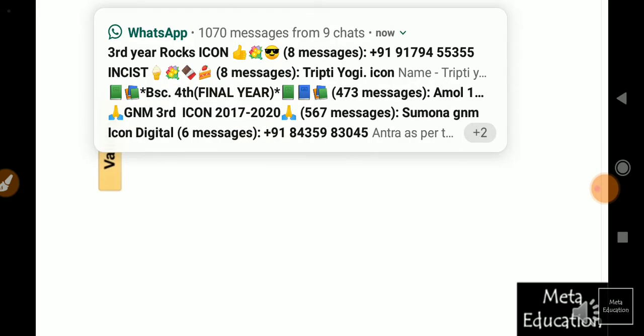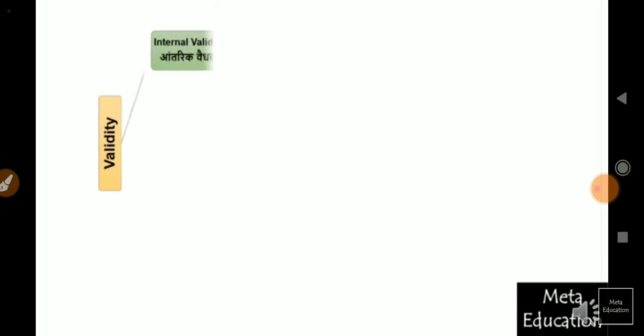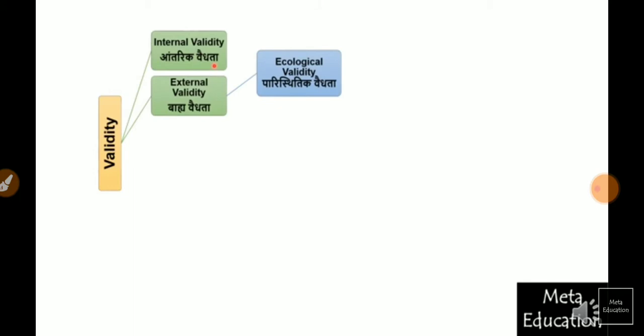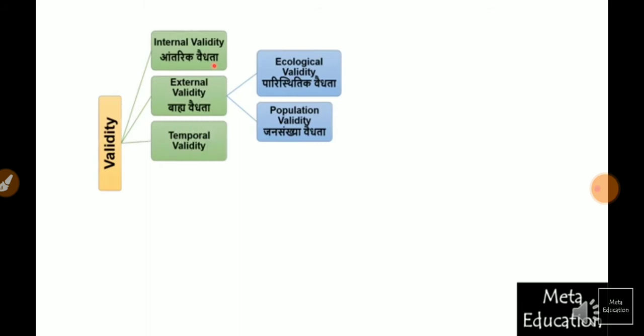There are many types of validity. The first is internal validity. The second is external validity, which has two sub-types: ecological validity and population validity. The third type is temporal validity. The fourth is face validity.